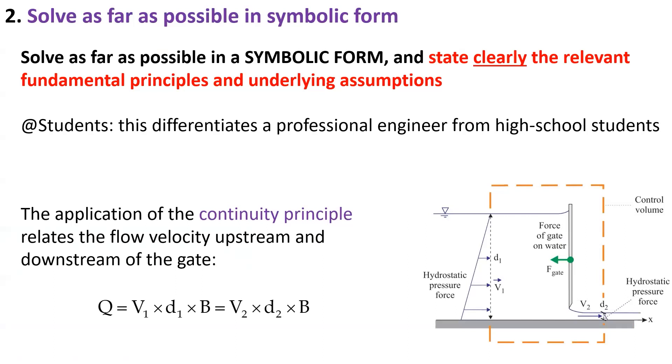So here, let us start by stating the first basic principle we use: the equation of conservation of mass, which states that the discharge Q equals the velocity V times the water depth D times the channel breadth B. This gives us a relationship between the velocity upstream and downstream of the gate.